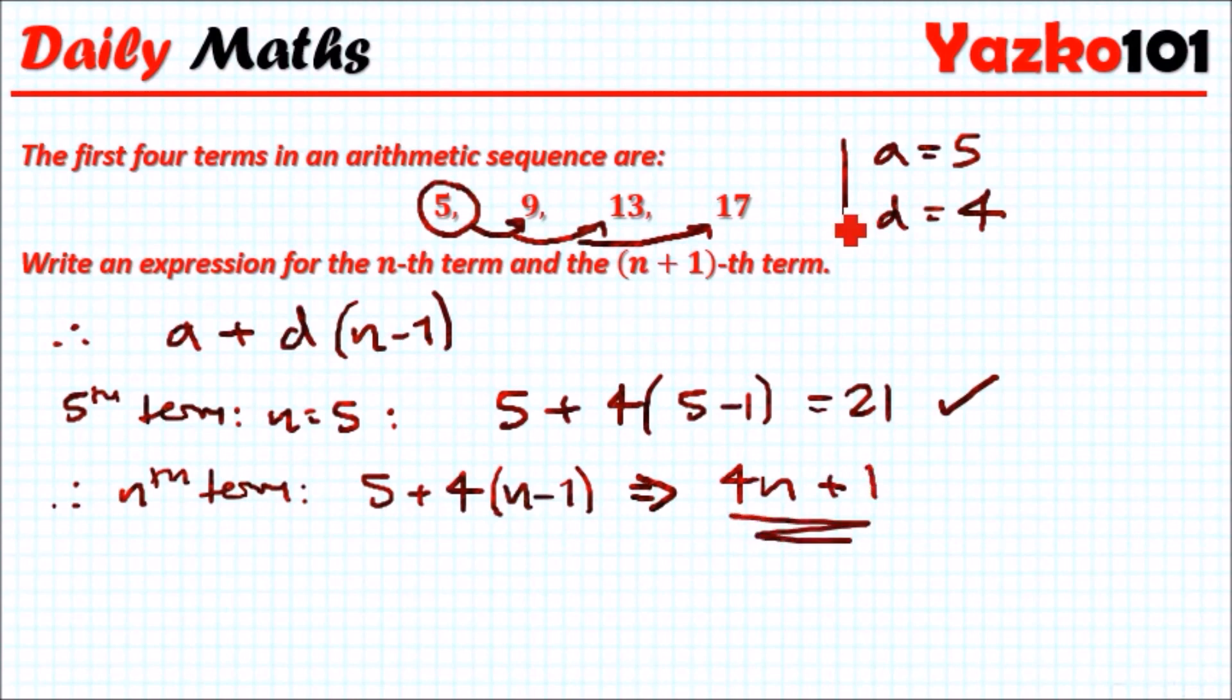And literally, if you want to find the (n+1)th term, you just plug in n plus 1 instead for n. Just like how we plug in n is 5, yeah? So now, using the same equation, this part, we just plug in n plus 1.